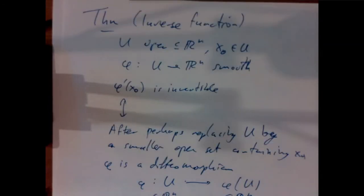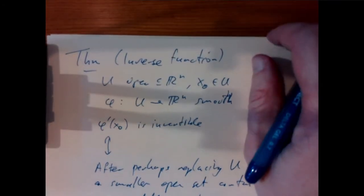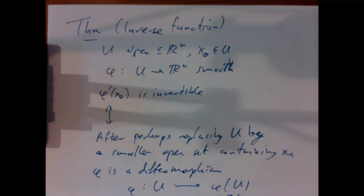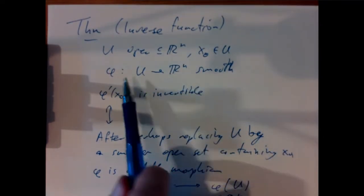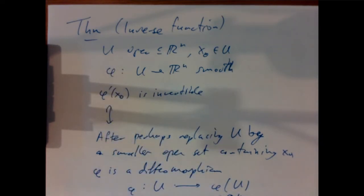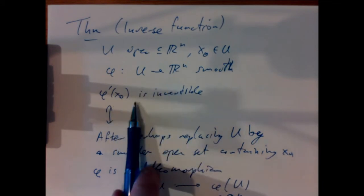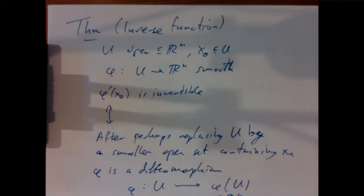The implicit function theorem is essentially the same result as the inverse function theorem but allowing parameters. Instead of one map φ, imagine φ depends on some parameters, and we want to say that if it depends on them smoothly, then the inverse map should depend smoothly as well.